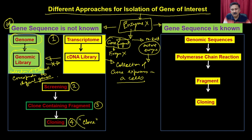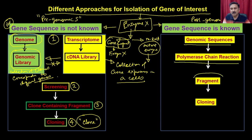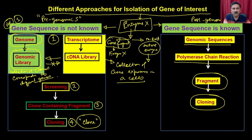In the post-genomic era, when people know the genomic sequences, you can use a technique called polymerase chain reaction (PCR), which gives you the amplified gene product. That can be cloned into a suitable vector and used further in overexpression and purification steps. First we will discuss approach one where the genomic sequence is not known, and then we will discuss the approach where the gene sequence is known.